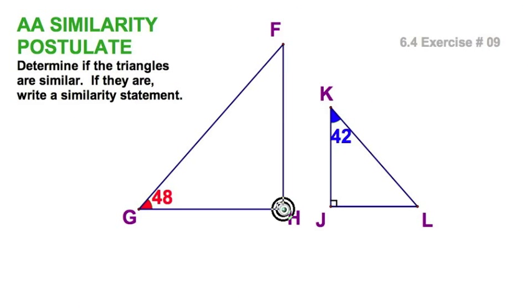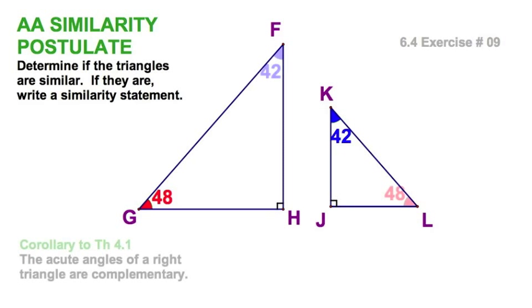Well, at first glance, these triangles only have one pair of angles in common, but a little bit of arithmetic and corollary to theorem 4.1 shows us that all three angles are in common.